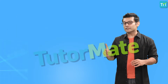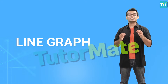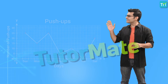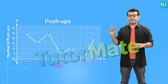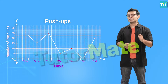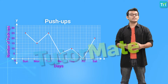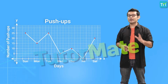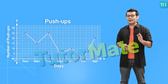A line graph displays data that changes continuously over periods of time. The horizontal line or x-axis represents the days and the vertical line or y-axis represents the number of pushups done by a person. So this graph represents the number of pushups done by a person in a week. The pushups are random but by representing it graphically we have created a pattern.